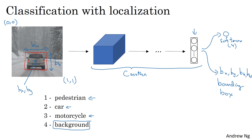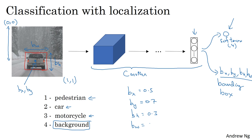If your training set contains not just the object class label but also four additional numbers giving the bounding box, then you can use supervised learning to make your algorithm output not just a class label but also the four parameters telling you where the bounding box of the detected object is. In this example, the ideal bx might be about 0.5 because it's about halfway to the right of the image; by might be about 0.7 since that's about 70% of the way down; bh might be about 0.3 because the height of the red square is about 30% of the overall image height; and bw might be about 0.4 because the width of the red box is about 40% of the overall image width.